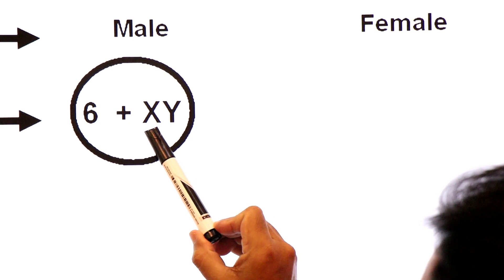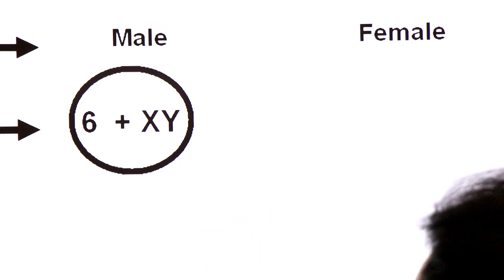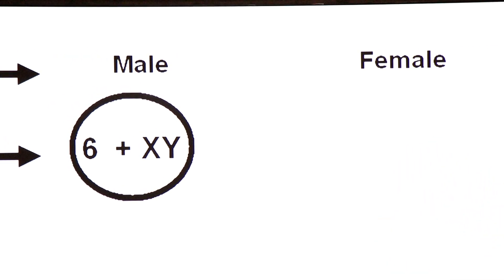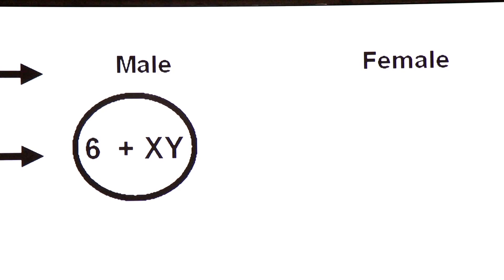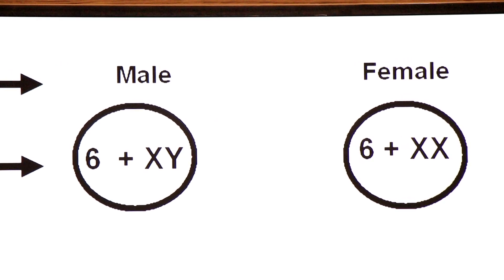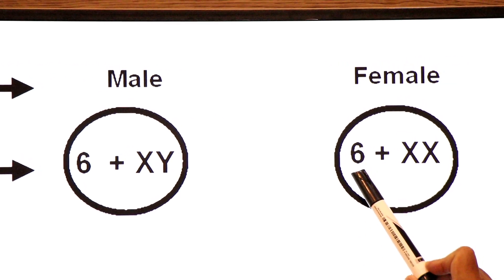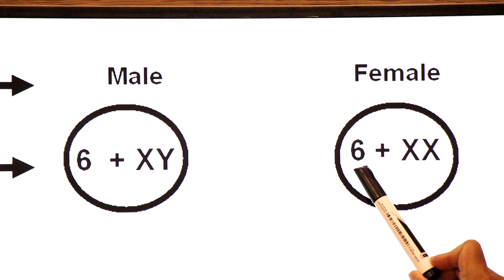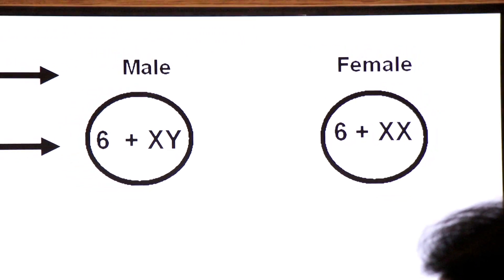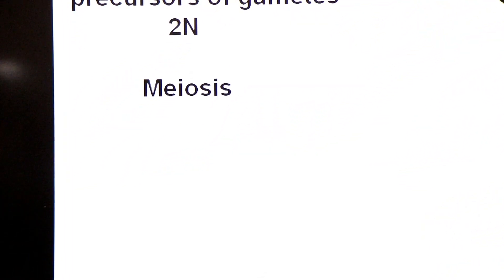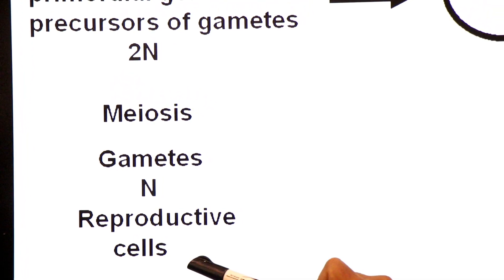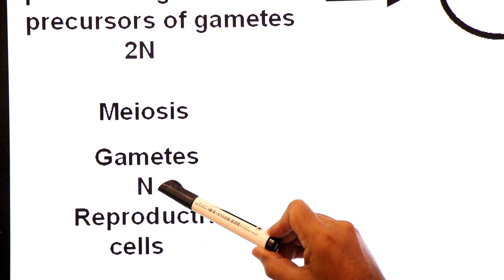The chromosomal number in spermatogonium of Drosophila male is 8 — 6 are the autosomes and XY is the pair of sex chromosomes. The precursor of egg in case of female is oogonium. Primordial Germ Cell in female Drosophila is oogonium, with chromosomal number 8 — 6 autosomes and one pair of sex chromosomes XX. It is meiosis that will produce gametes — reproductive cells — and N stands for haploid.